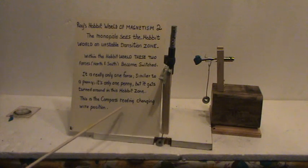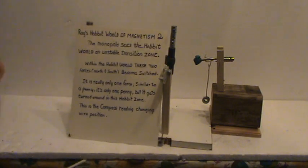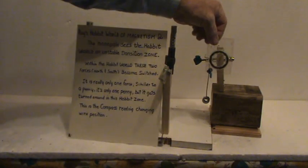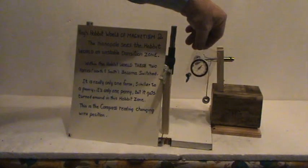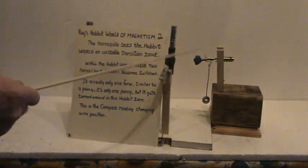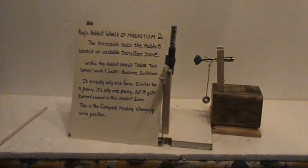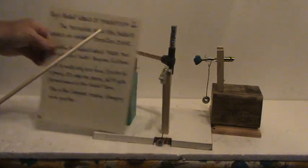This is the compass reading changing with position. Actually, if you remember, we were east or something like that when we're down in there, we'll say east right in the middle. And that's very unusual to me. I've always wondered what these neutral zones were doing. But anyhow...